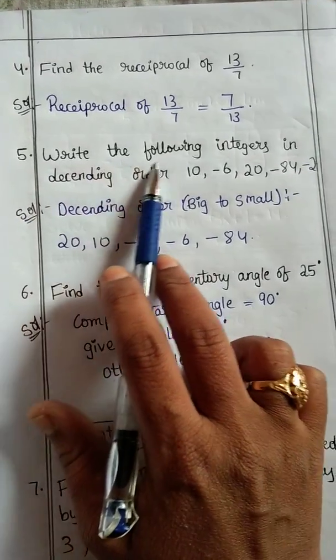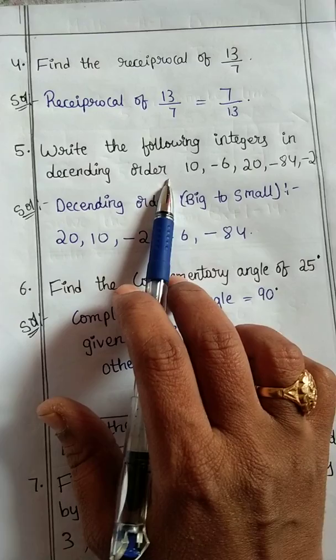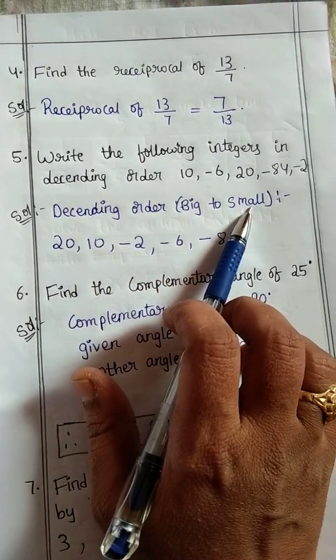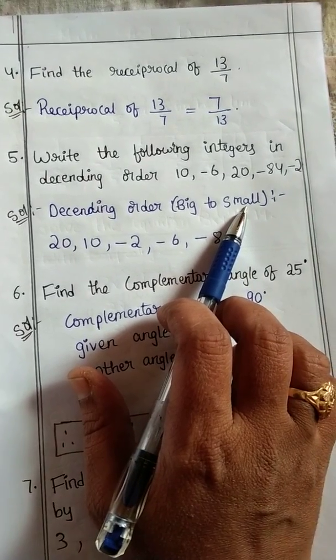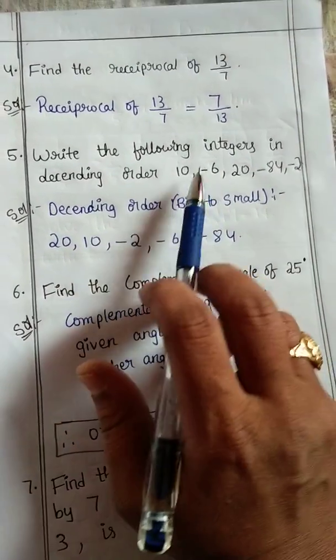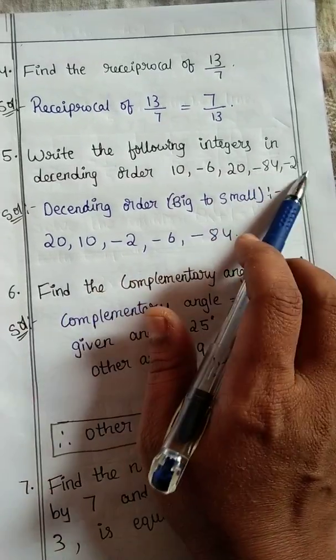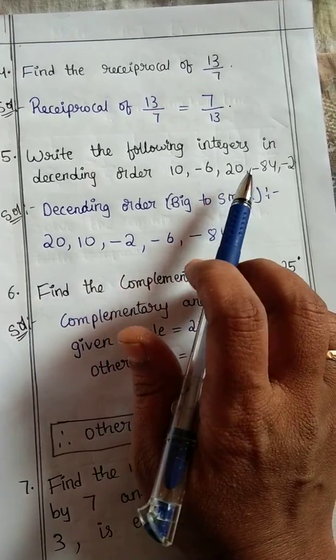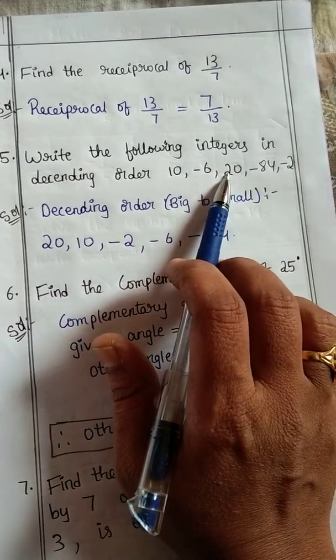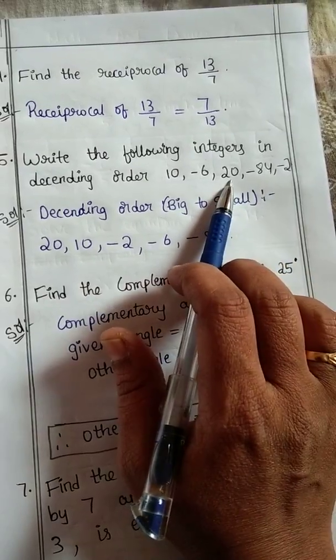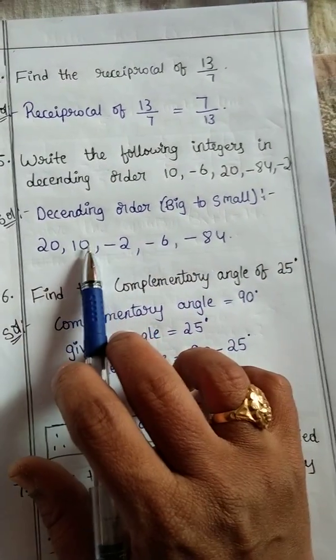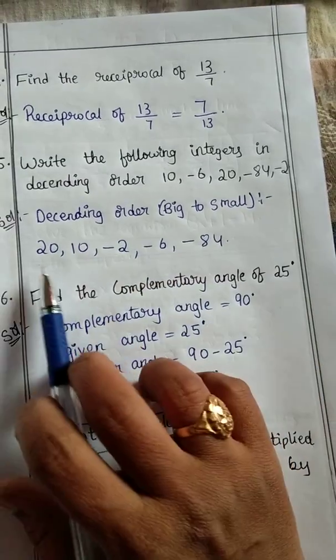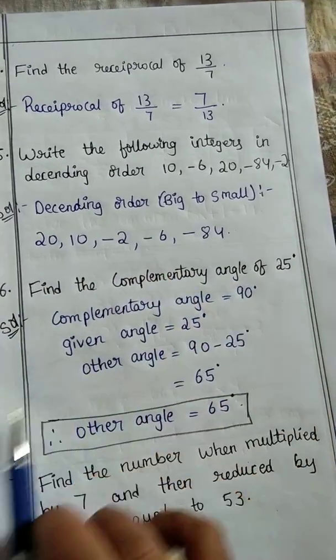Next, fifth question: write the following integers in descending order. Descending order means big to small or decreasing order. Here we have negative numbers and positive numbers. First, biggest number. We should write big to small. Here the biggest number is 20, so 20, next 10, next minus 2, minus 6, minus 84.